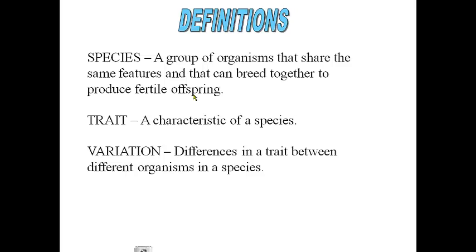For instance, human beings have a trait known as blood type. Variations or differences in that trait between different human beings are that some people have blood type A, some have B, some have O, and some have AB. So blood type is the trait, and the variation would be all the different blood types that the species can have.